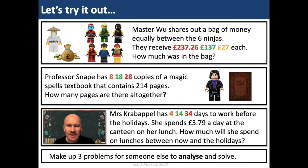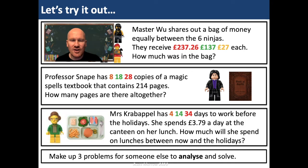It's time to try that out. Can we apply that success criteria to solve each of the following problems? I've got three problems each with three different values and I want you to choose the values most suited to you. Question one — I'm going to use the yellow value: Master Wu shares out a bag of money equally between 6 ninjas. They receive £27 each. How much was in the bag? Question two — the green number: Professor Snape has 18 copies of a Magic Spells textbook that contains 214 pages. How many pages are there altogether? And question three — the red number: Mrs Crabapo has 34 days to work before the holidays. She spends £3.79 a day at the canteen on her lunch. How much will she spend on lunches between now and the holidays? Analyse those problems and solve them by applying the success criteria. If you finish, make up three similar problems for somebody else to solve. Pause the video for ten minutes or so and have a go.